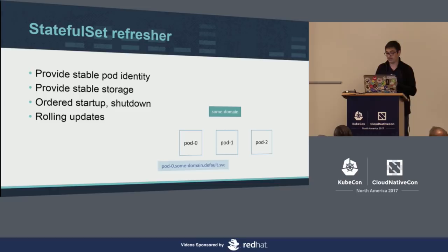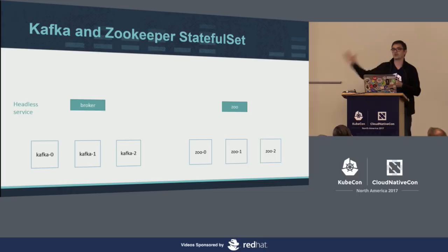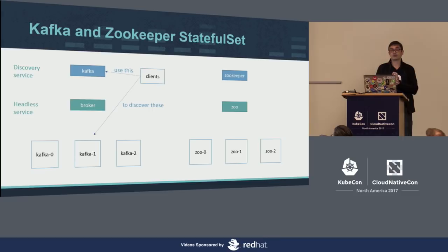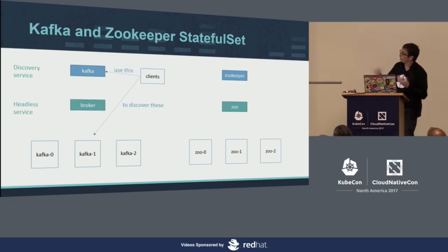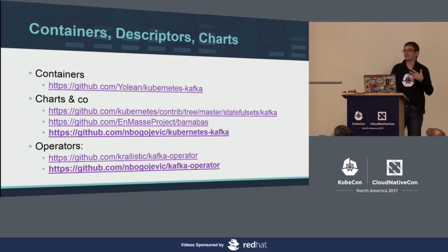To run Kafka and ZooKeeper, we need two StatefulSets. At Amadeus, when we run Kafka and ZooKeeper deployments, we always run one Kafka and one associated ZooKeeper — we deploy one-to-one. In addition, there is a discovery service. Unlike the headless service which doesn't have a cluster IP, the discovery service has a cluster IP and allows clients to bootstrap by just saying 'connect to Kafka' — it falls on one broker and then learns about the full cluster. To deploy in Kubernetes you need containers, descriptors, and charts for repeatable deployments. There are a number of projects on GitHub for this.